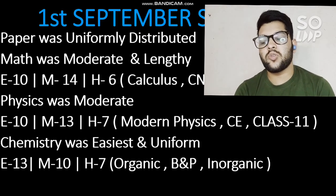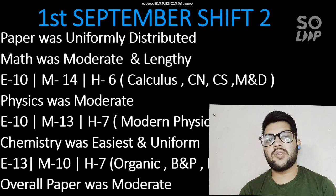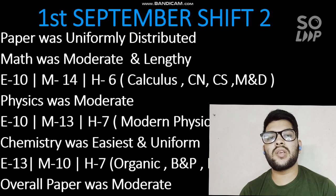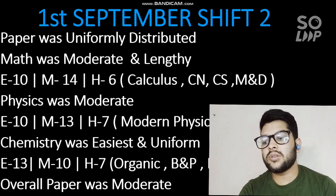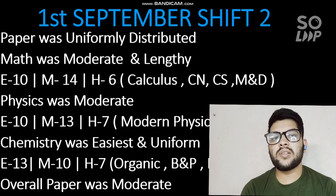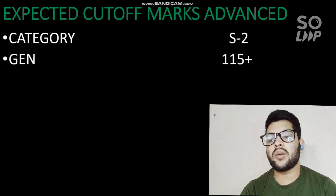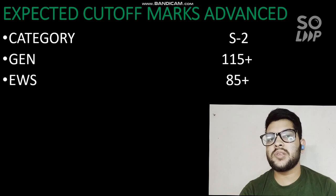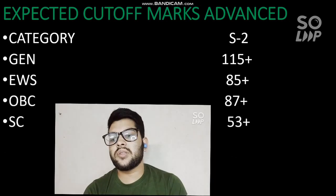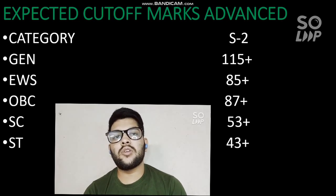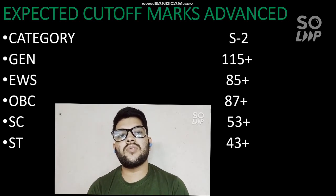Overall, the difficulty was moderate and similar to the previous shifts. With seven total shifts, there is not much difference in difficulty level across shifts. For the JEE Advanced expected cutoff, category-wise marks required are: General — 115+ marks, EWS — 85+, OBC — 87+, SC — 83+, and ST — 43+. If you have scored these marks, you will be eligible for JEE Advanced.